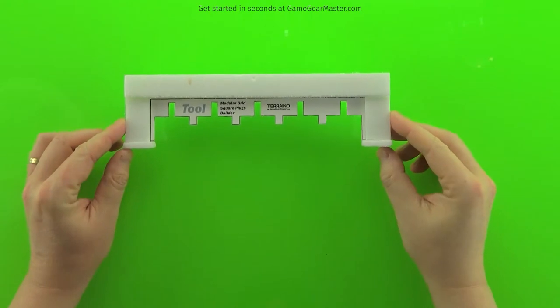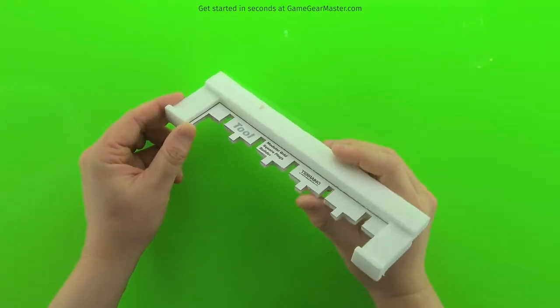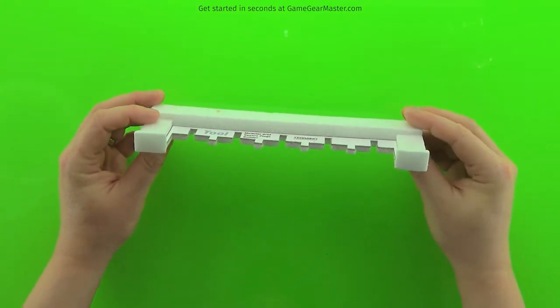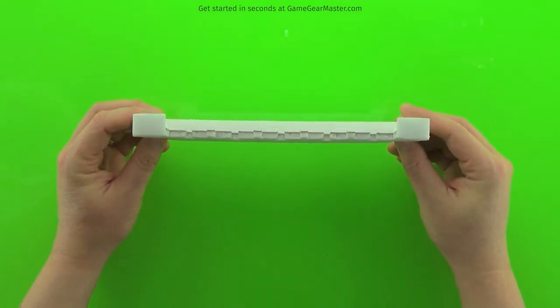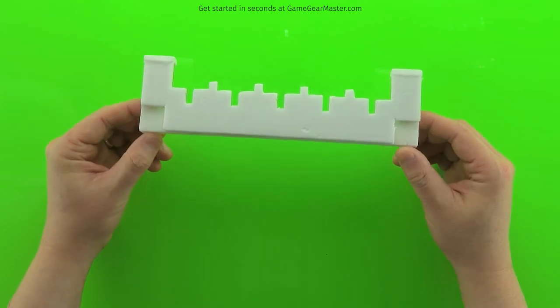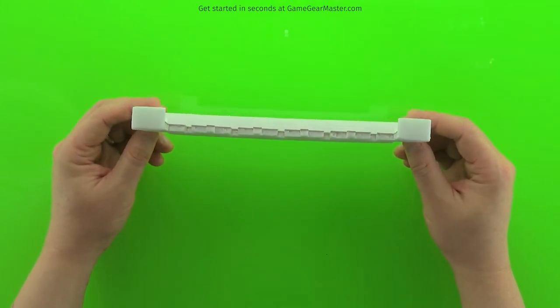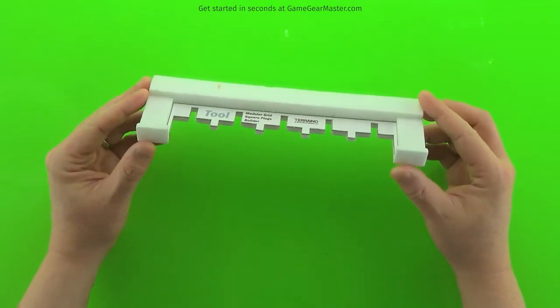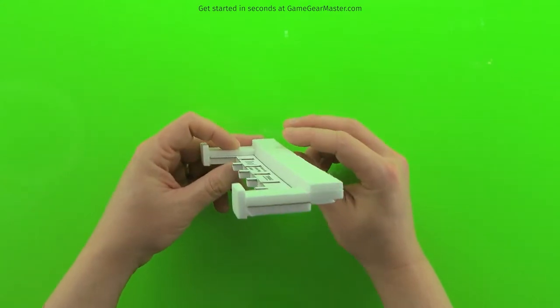We're first going to make this tool, the modular grid square plugs builder. It allows you to build five grid square plugs at a time. You slide in a strip of foam board that is the width of your grid squares, and then you attach cross connectors to it to make the grid square plugs.